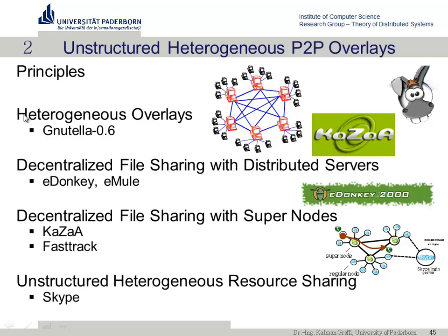Welcome to today's lecture. In the last lecture we stopped after the presentation of Gnutella. Now we are looking into unstructured heterogeneous P2P overlays. To recapitulate, we introduced the terms homogeneous and heterogeneous for the properties of nodes. If all nodes are considered equal, they are homogeneous; if they have different capacities, they are heterogeneous. Today we will see some heterogeneous unstructured P2P overlays.